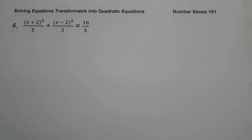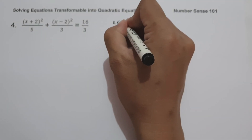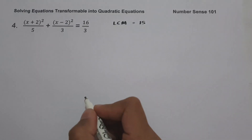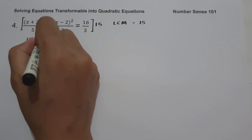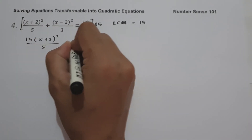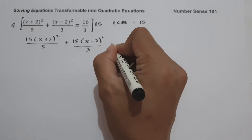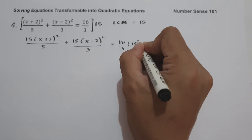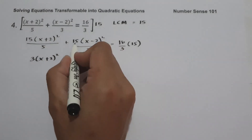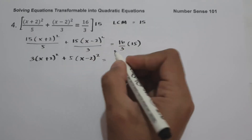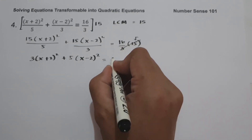On example number 4, we have the quantity x plus 2 squared over 5 plus the quantity x minus 2 squared over 3 equals 16 over 3. The first thing we'll do is multiply the whole equation by the LCM of 5 and 3, which is 15. Multiplying: 15 times (x+2)²/5 plus 15 times (x-2)²/3 equals (16/3) times 15. This gives 3(x+2)² plus 5(x-2)² equals 80.